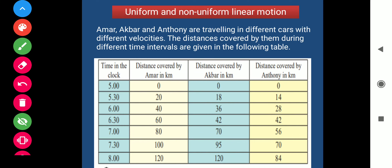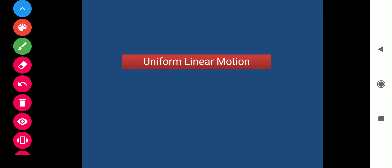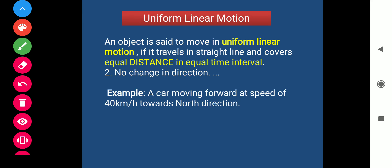From this example, we can define uniform linear motion. An object is said to move in uniform linear motion if it travels in a straight line and covers equal distance in equal time interval. There should be no change in direction. For example, if a car is moving forward at a speed of 20 kilometres per hour towards the north direction, when an object covers equal distance in equal time interval, it is said to be moving with uniform speed.